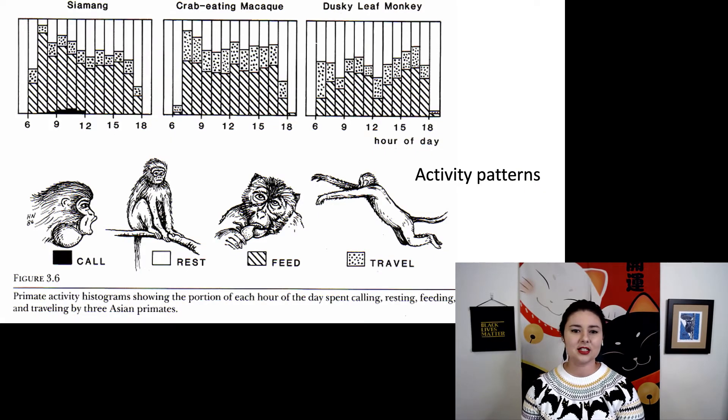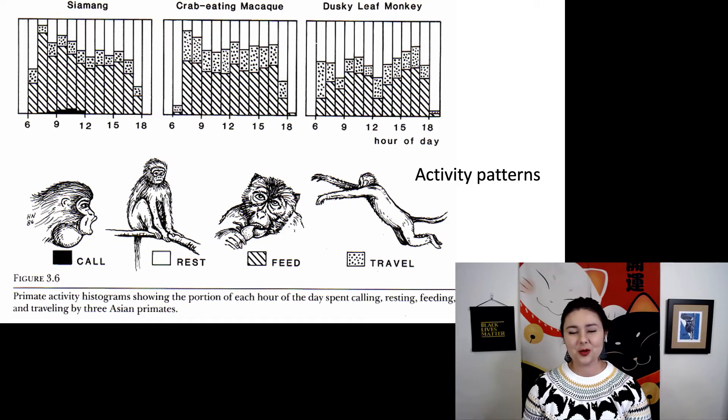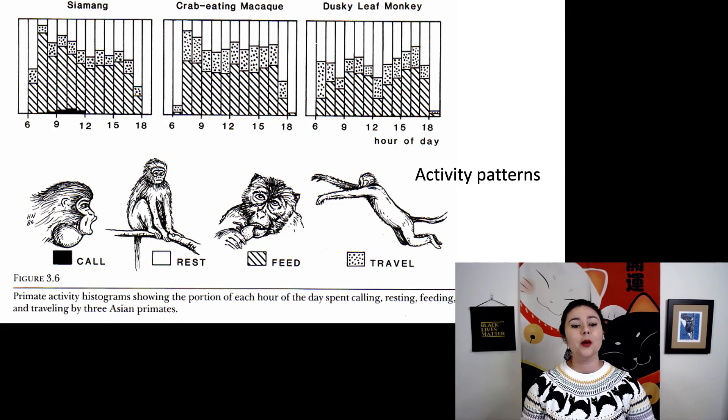Let's compare the activity patterns of a couple different species. Here, we have a siamang, or a small ape, a crab-eating macaque, and a dusky leaf monkey. You can see our siamang, they spend some time calling in the morning. Like our howler monkeys, they make very loud calls in the morning. They are territorial, and they're telling other siamangs to stay away. This is mine. But they also spend a lot of their day feeding.